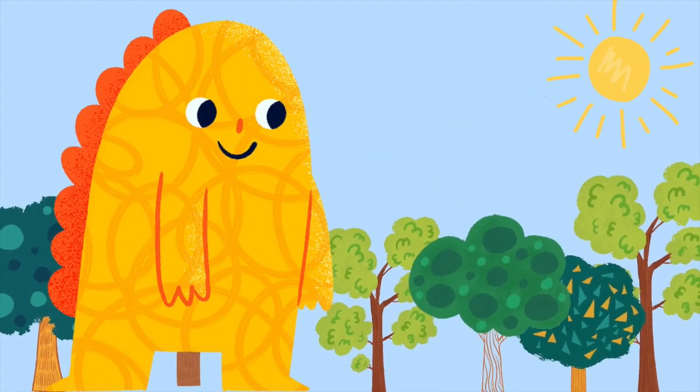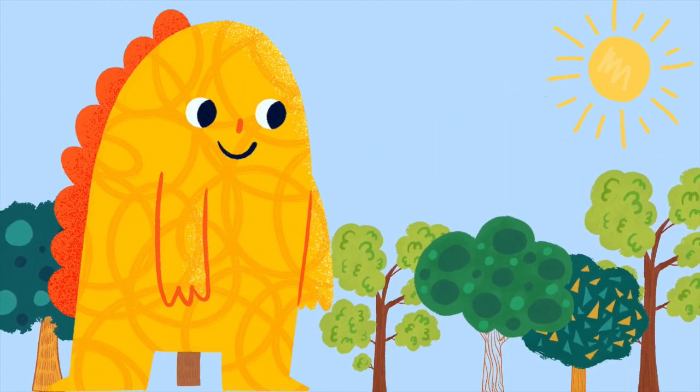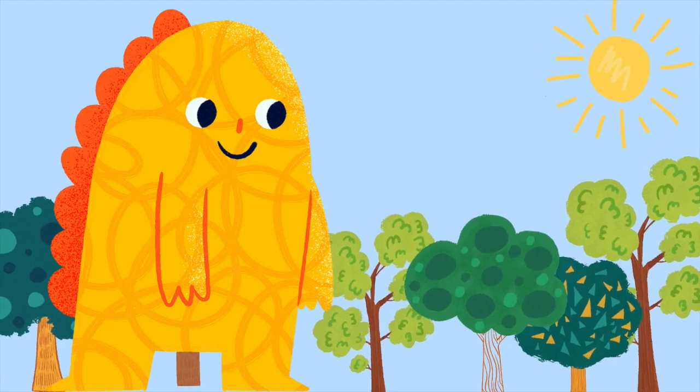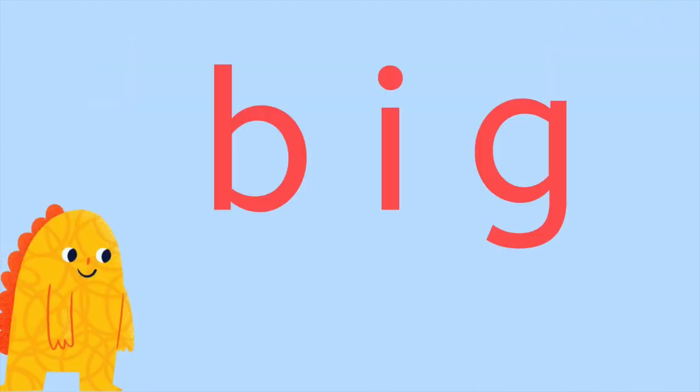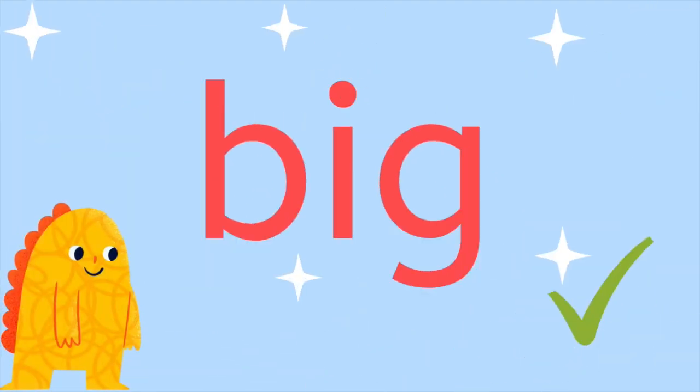B, ig. B, ig. What word is the blendosaurus trying to say? Let's help him blend the sounds together to make a word. B, ig. B, ig. Big. B, ig. Big.